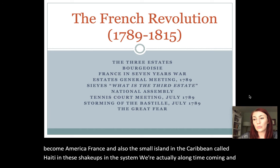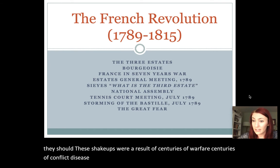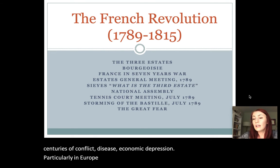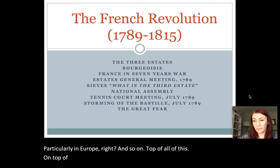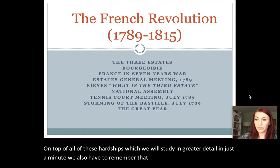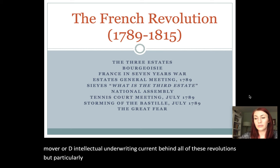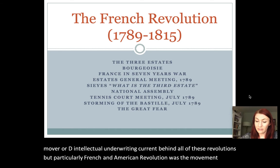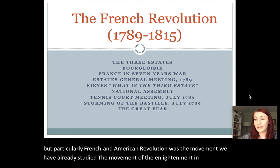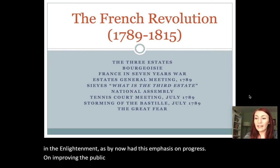Between approximately 1774–1775 through 1815, the entire Western world was swept by numerous political revolutions, including those in British America, France, and the small Caribbean island of Haiti. These shakeups were a long time coming — a result of centuries of warfare, conflict, disease, and economic depression, particularly in Europe. On top of all these hardships, we also have to remember that the great intellectual catalyst behind all these revolutions was the movement we've already studied: the Enlightenment.